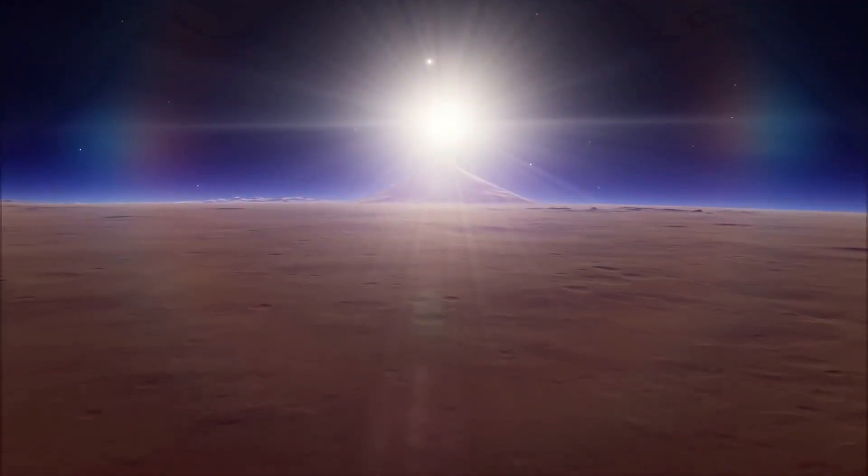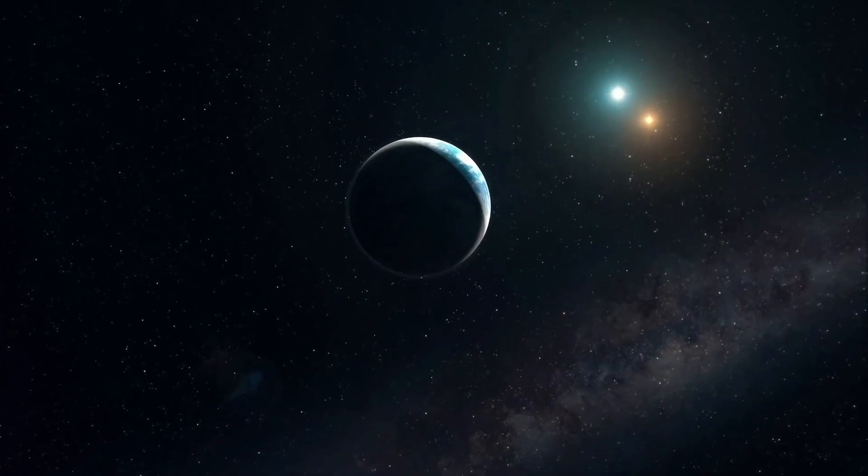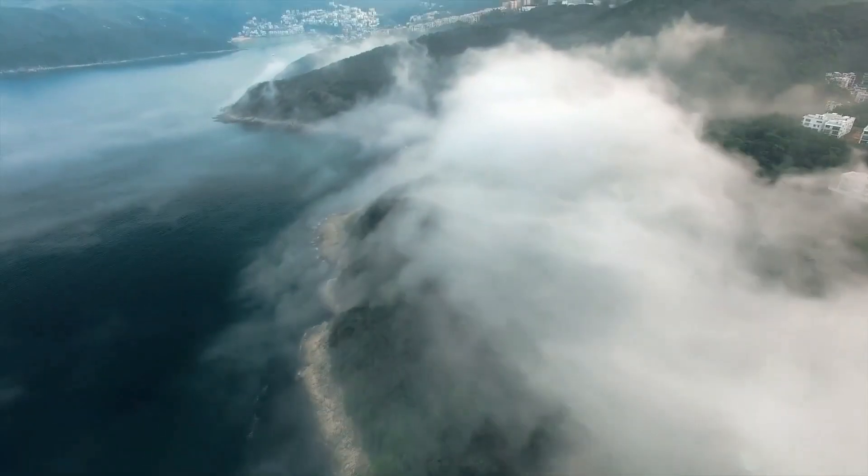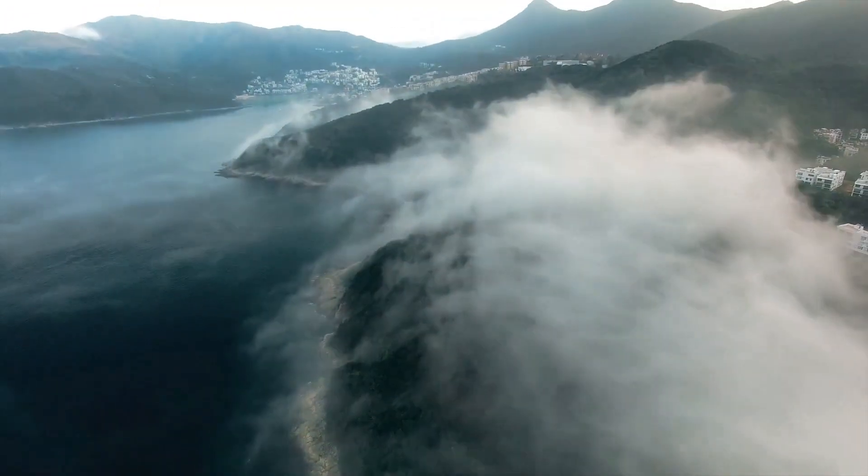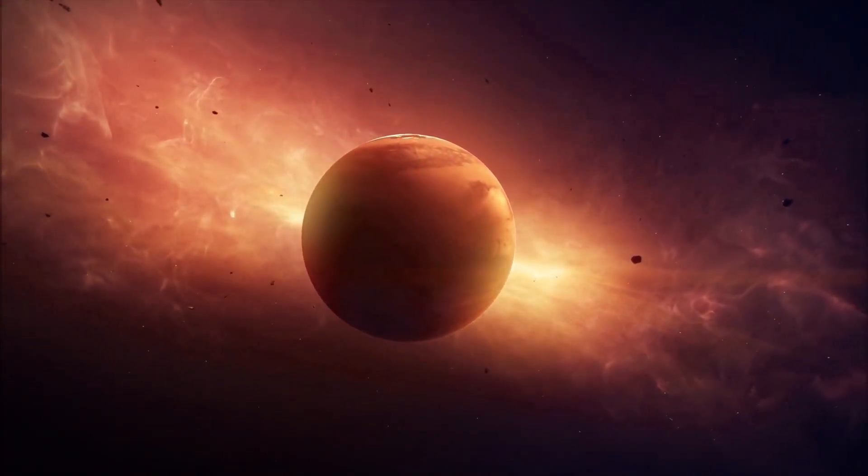Interestingly, Proxima Centauri b receives about the same amount of solar energy from its star that Earth does from our sun. So, theoretically, Proxima Centauri b could have water on its surface. It could be habitable, but of course, we don't know yet all the details about the habitability of exoplanets.